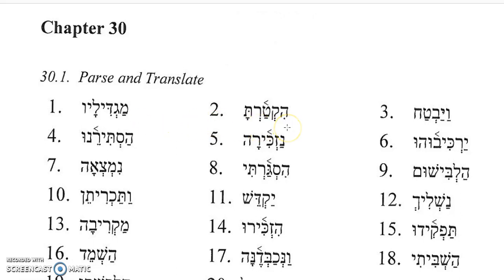Number two, you have Hiктarta. You have Katar, which means to burn. You have a performative Hay with a Hirik under it, so that is an indication of a Hifial. Then you have a Tav at the end with a Kamats under it — that's the second masculine singular ending in the perfect. So you would translate it: you cause someone or something to burn.